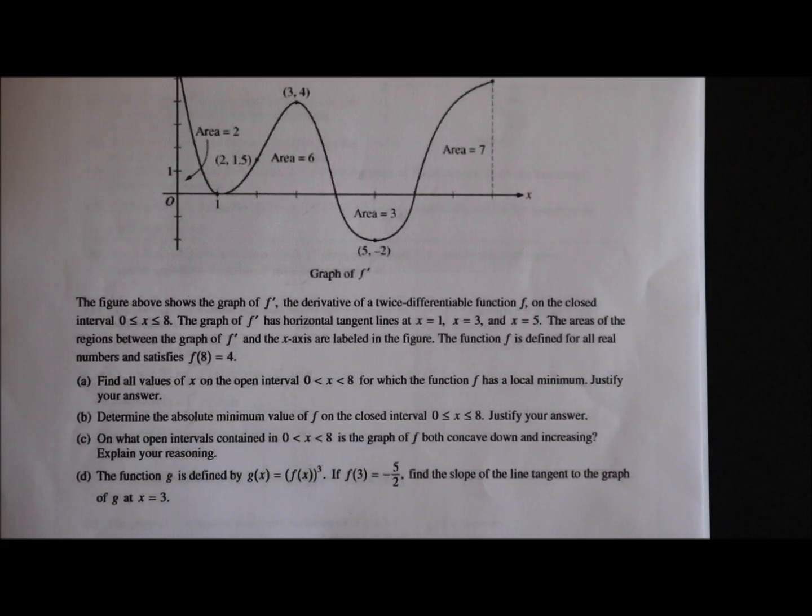Here we have a graph of f prime. So it's important to realize when you're looking at a graph, are you looking at a function, its derivative, or its second derivative? In this case, we're looking at f prime. The figure shows the graph of f prime, the derivative of a twice differentiable function f on the closed interval from 0 to 8. The graph of f prime has horizontal tangent lines at x equals 1, 3, and 5. The function f is defined for all real numbers and satisfies f of 8 equals 4. So there is an initial condition - we know when x is 8, the y value is 4 for the function f.